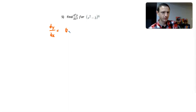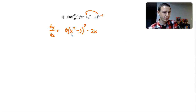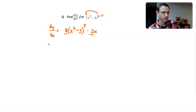So that's going to be 6 times x squared minus 3, raised to the 5th — 6 minus 1, 6 comes down for chain rule — times the derivative of the inside. The derivative of x squared is 2x, and the constant goes away. So I have 6 times x squared minus 3 to the 5th times 2x. Let's multiply: 6 times 2 is 12.